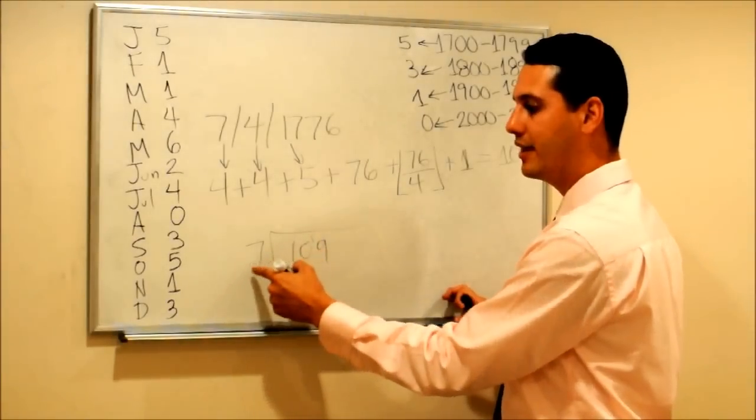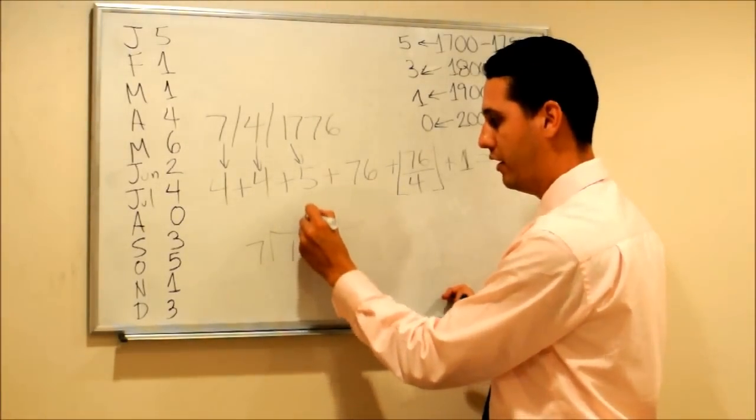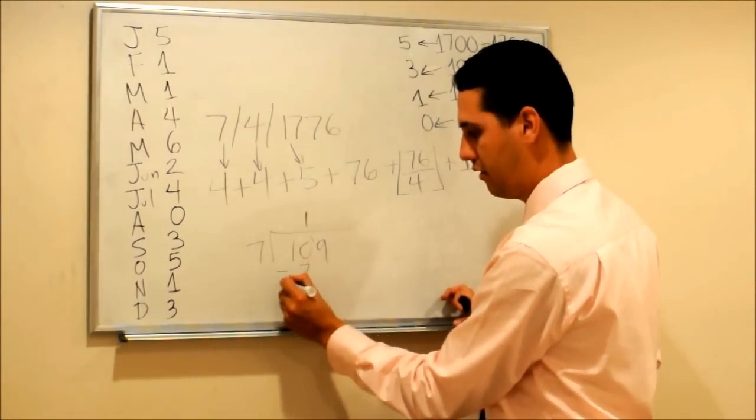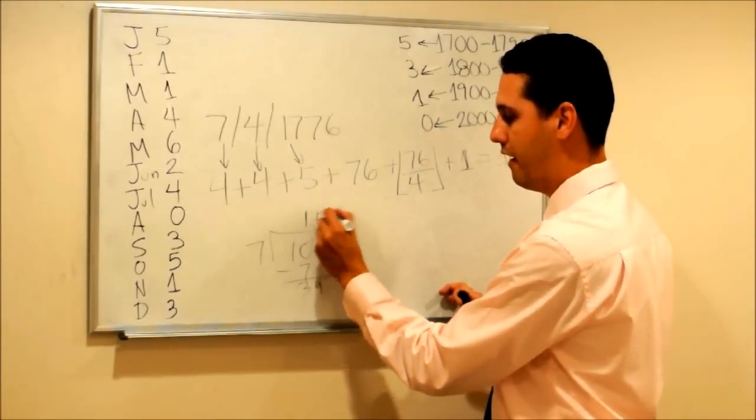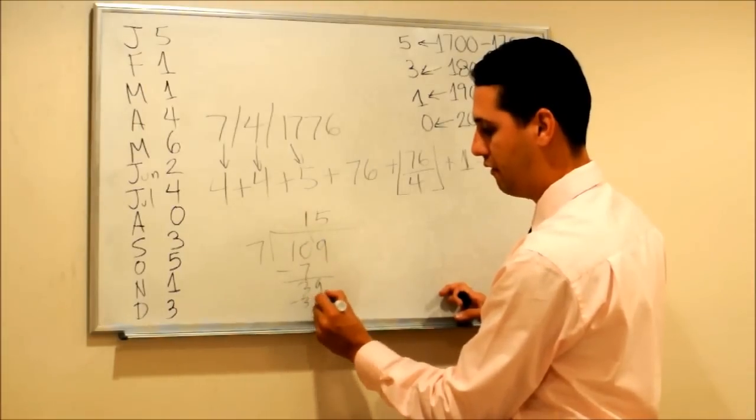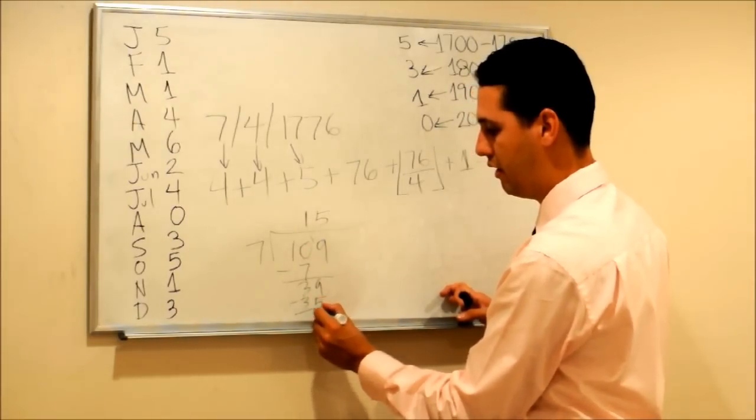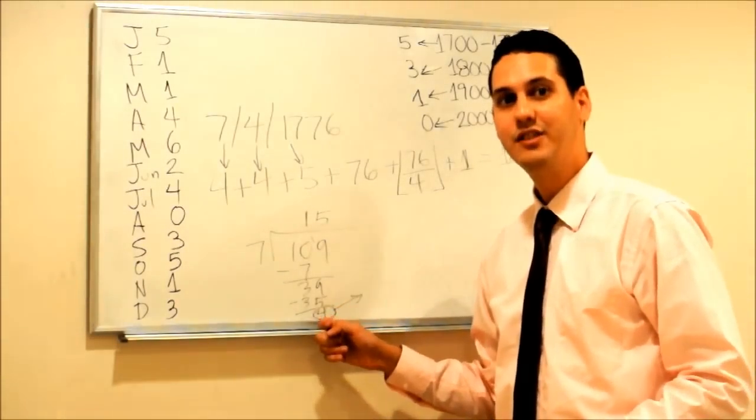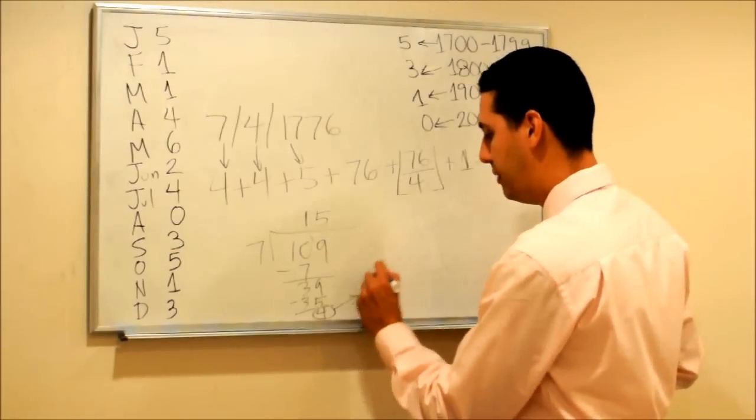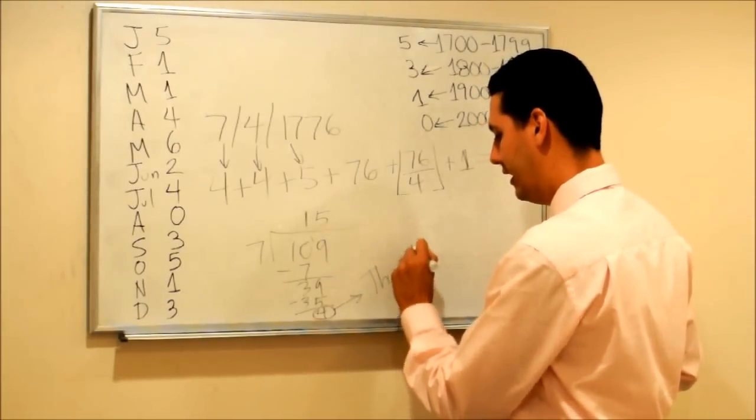Let's do it. How many times does 7 go into 10? Once. How many times does 7 go into 39? Five times.